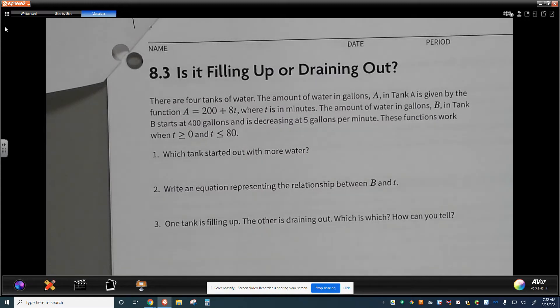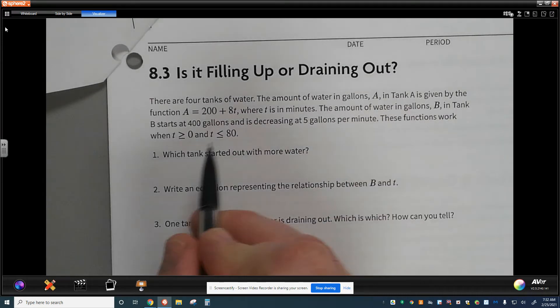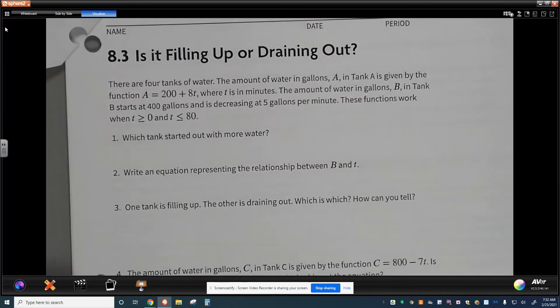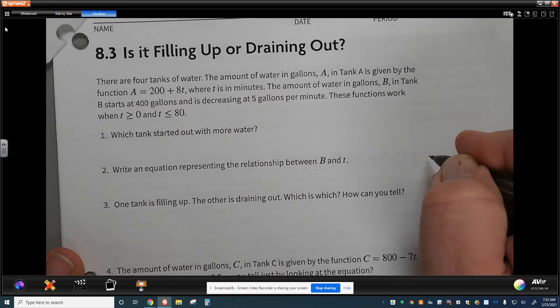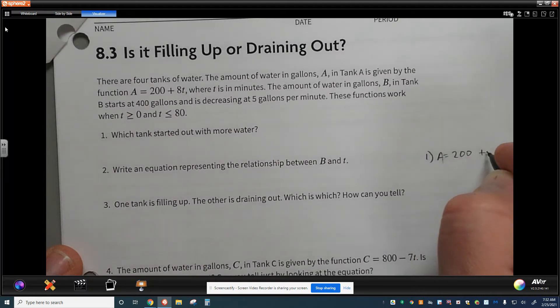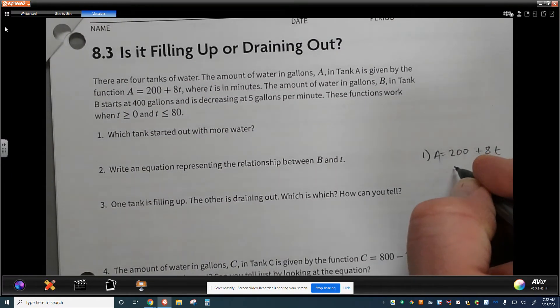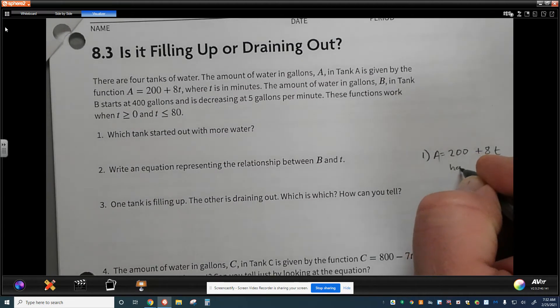There's four tanks of water. The amount of water in gallons, A, in tank A is given by the function A equals 200 plus 8T. I think what I want to do is I want to go tank 1. I'm going to go ahead and write these off to the side just so I don't lose track of any of them. So tank A, 200, the amount of water in there is equal to 200 plus 8 times T. Now if I start to interpret this, I think where T is in minutes, I think that might help me as well. So this tank right here is starting with 200 gallons and then fills 8 gallons a minute.